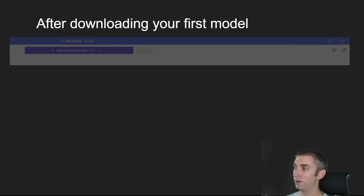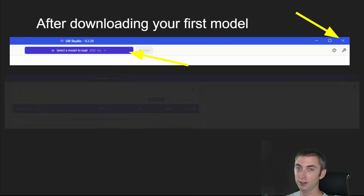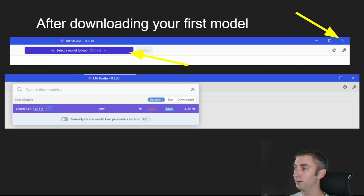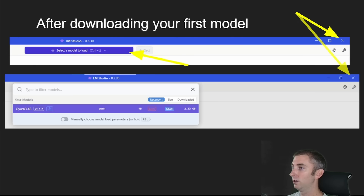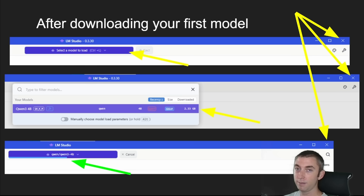After you've downloaded your first model, let's ground ourselves by finding the X icon in the top right-hand corner of the window, and then click on 'Select a Model to Load.' When you click this, a drop-down menu will appear and listed beneath it will be the models you have downloaded already. As you can see, this Qwen3 4-billion-parameter model is the one that was recommended to me. I've completed the download and I'm now going to click on that model after clicking 'Select Model to Load.' I click the model I've downloaded and I can see a progress bar loading the model into memory.